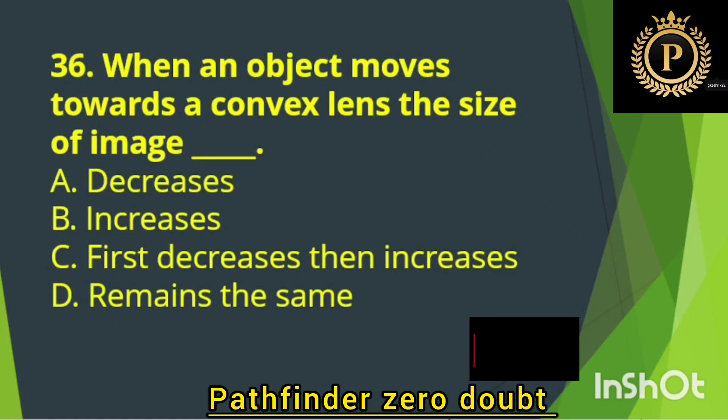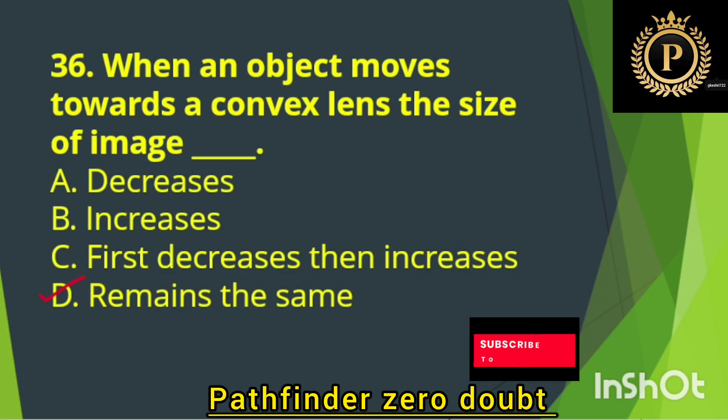When an object moves towards a convex lens, the size of the image — Remains the same.